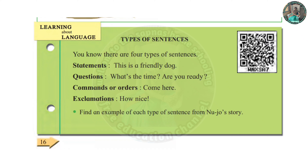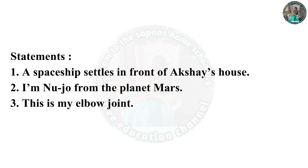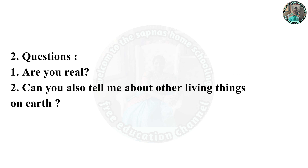Commands and orders — it is usually a common thing. Come here. Exclamation: How nice! This is my elbow joint. Question: Are you real? Can you also tell me about other living things on earth? Command and order: Look at me!